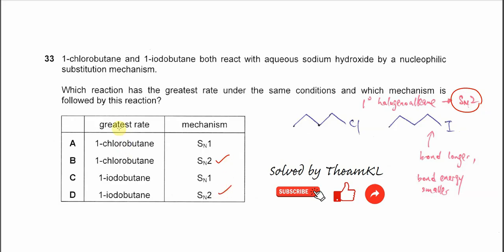Now which one has the greatest rate? The rate of reaction is greatly affected by the bond length, and the bond length is affected by the size of the halogen.